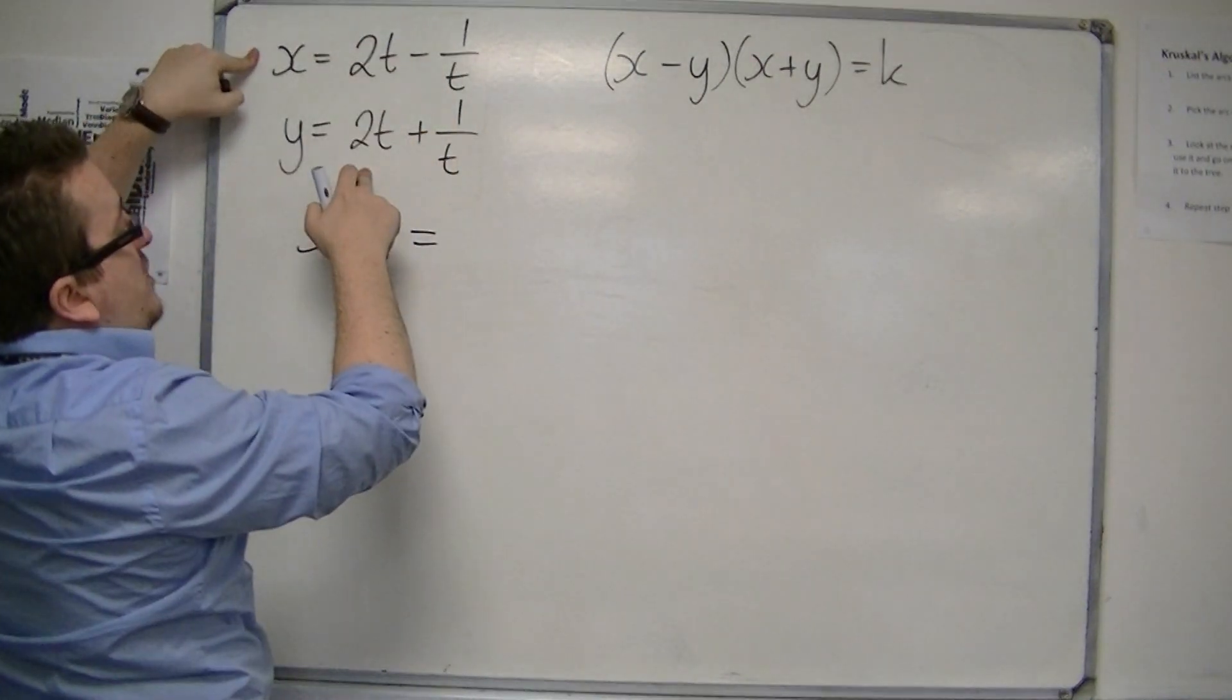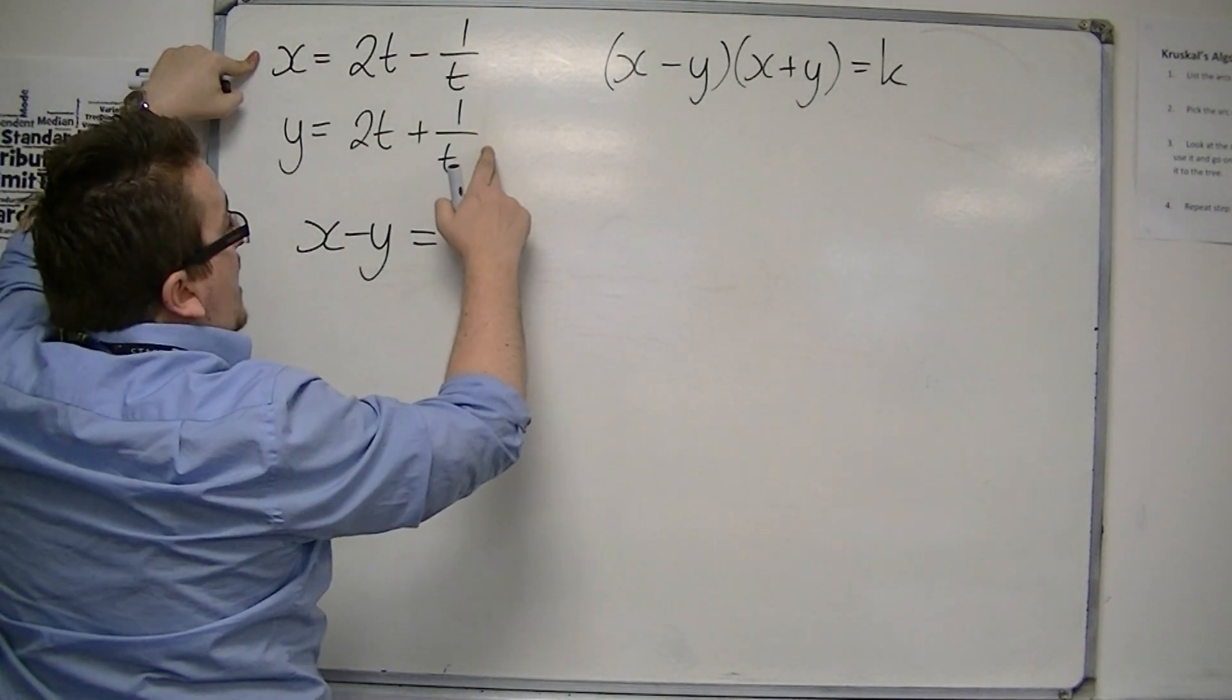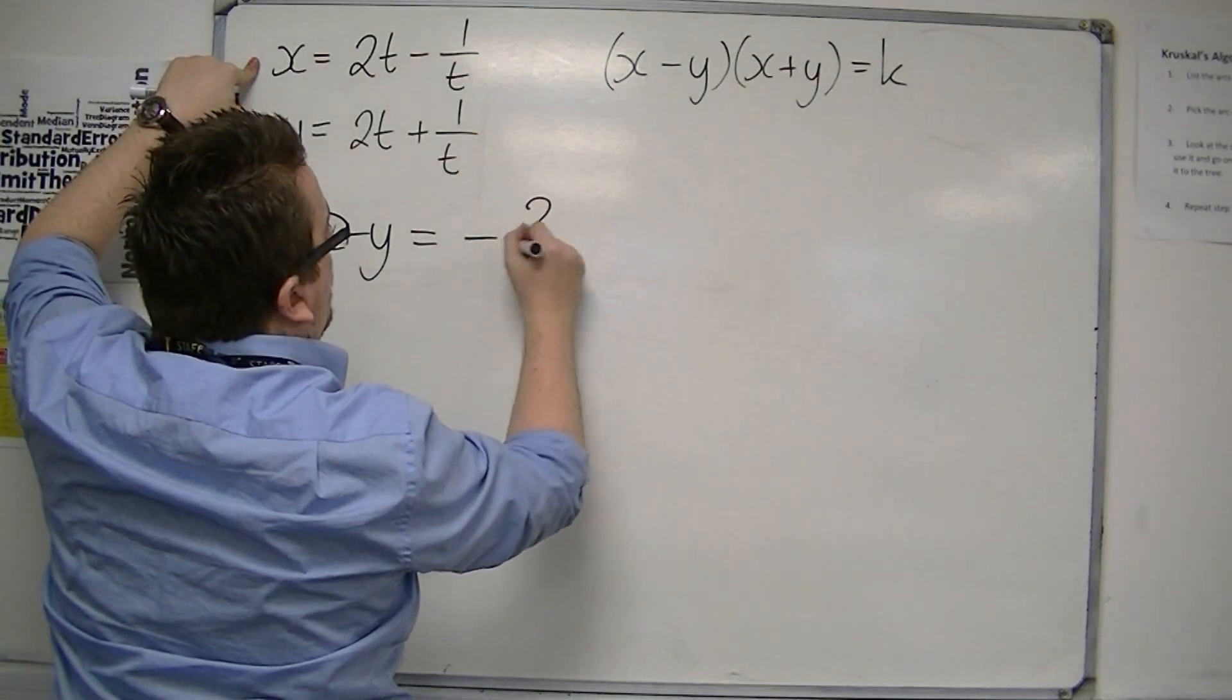So I have 2t take away 2t, well that's 0, and minus 1 over t take away 1 over t, which is minus 2 over t.